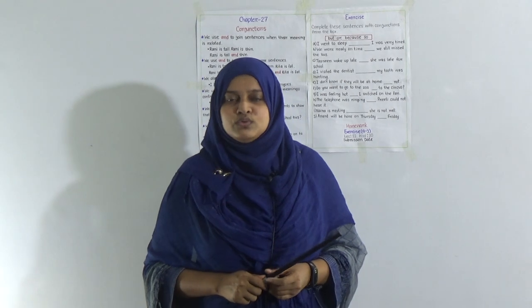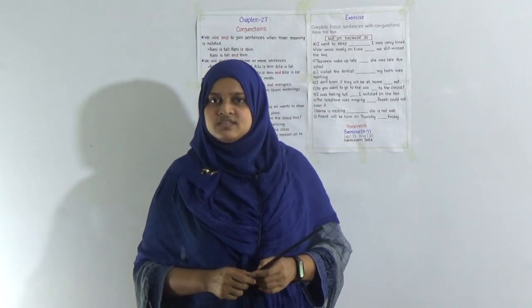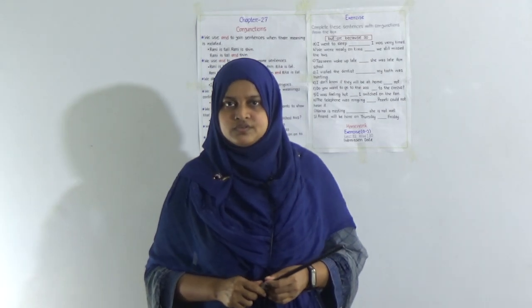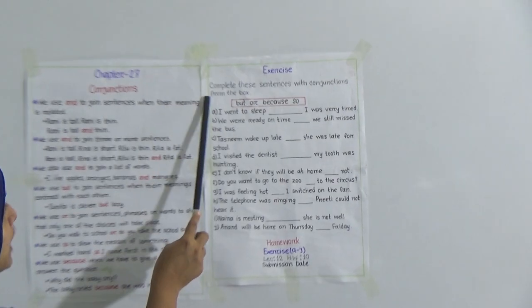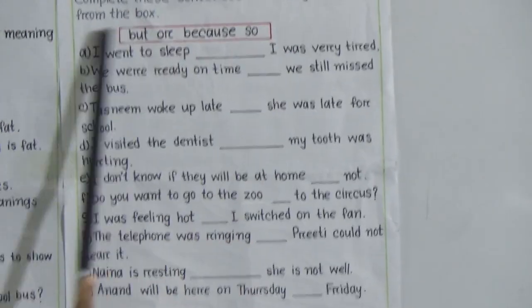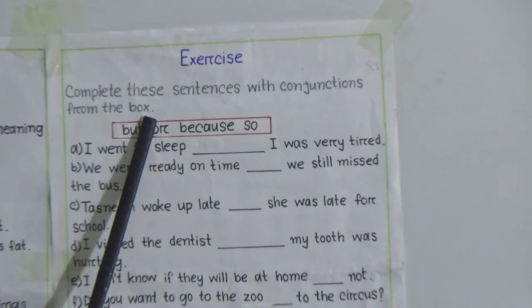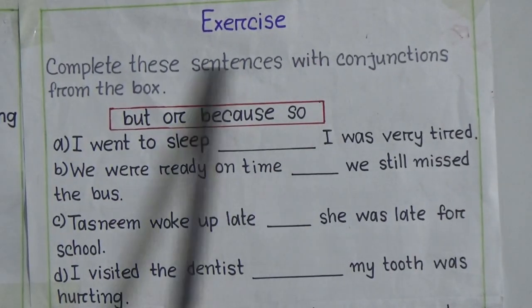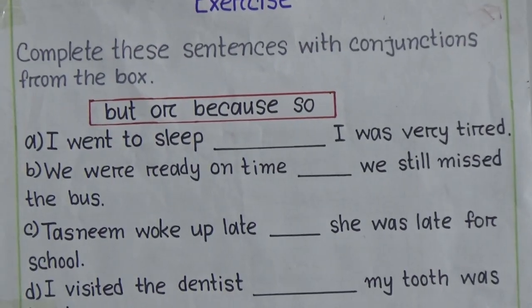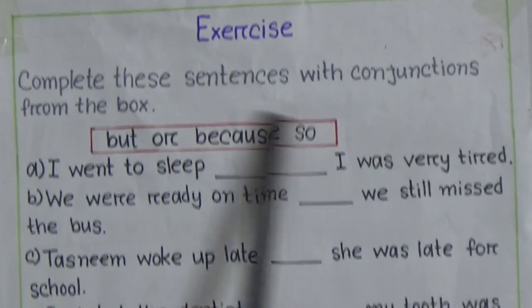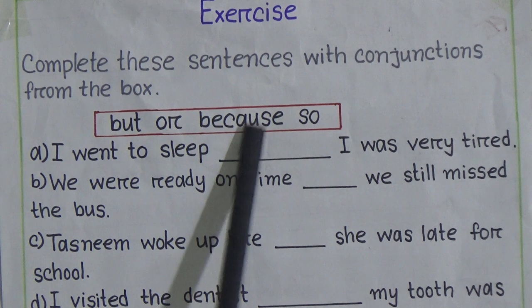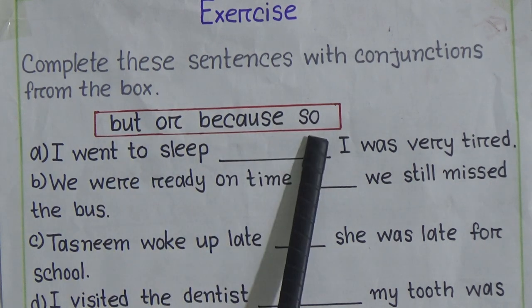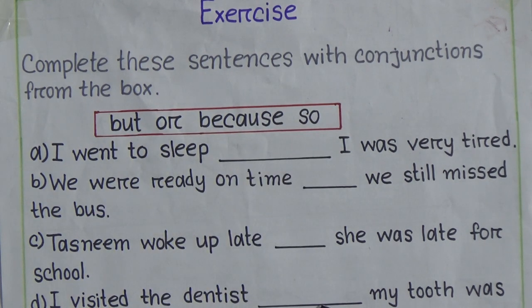I hope you understood the rules properly. Now we'll do some exercises based on these rules about conjunctions. The question is: complete these sentences with conjunctions from the box. In the box you can see the conjunctions: 'and', 'but', 'or', 'because', 'so'. From this box you have to fill in the gaps correctly.